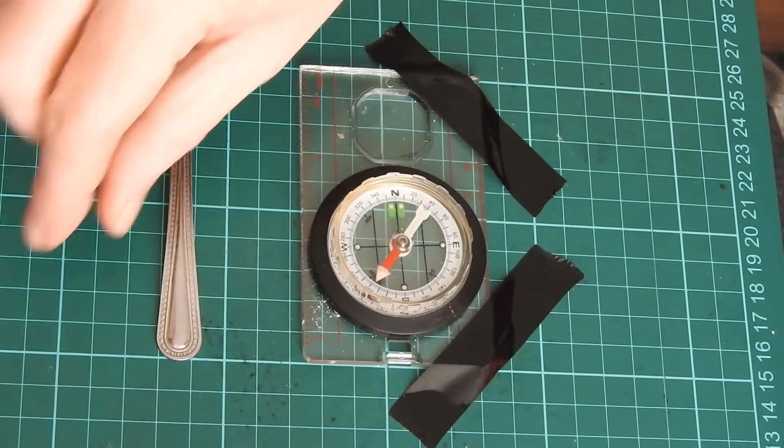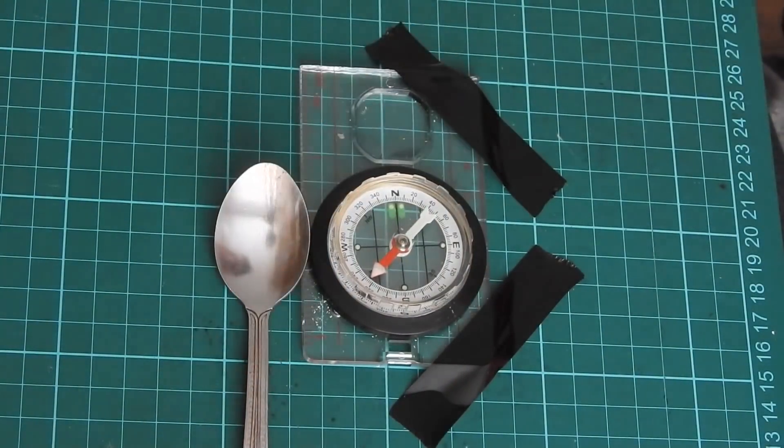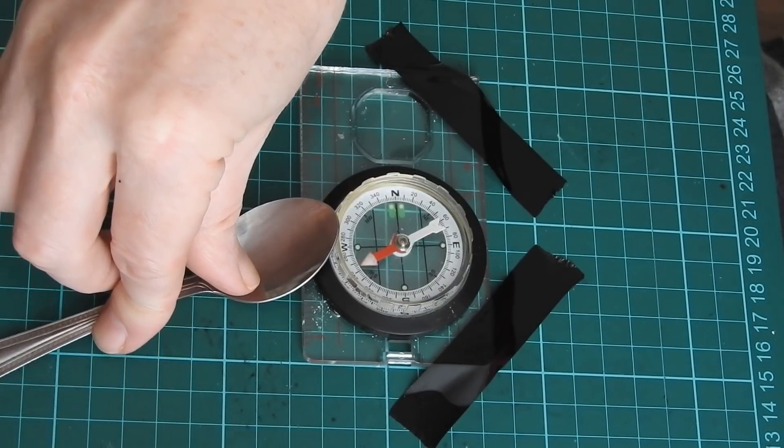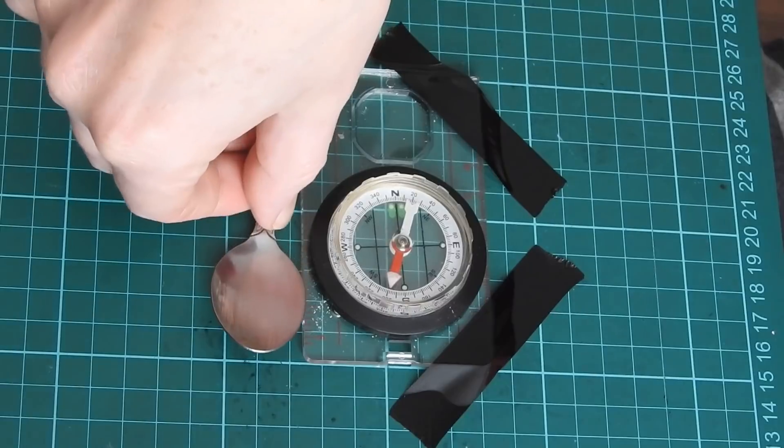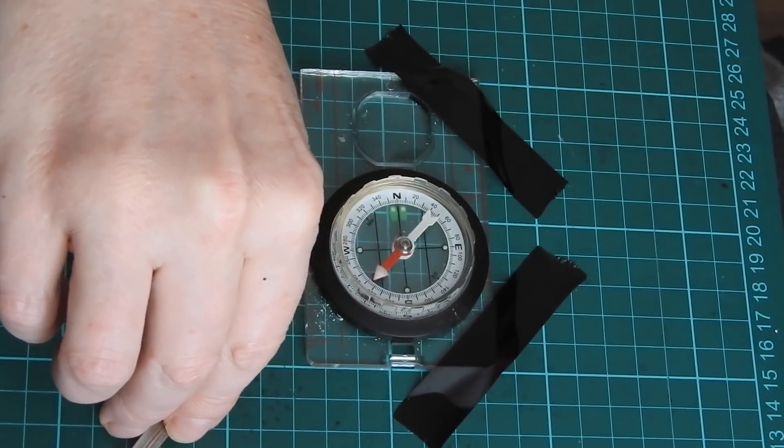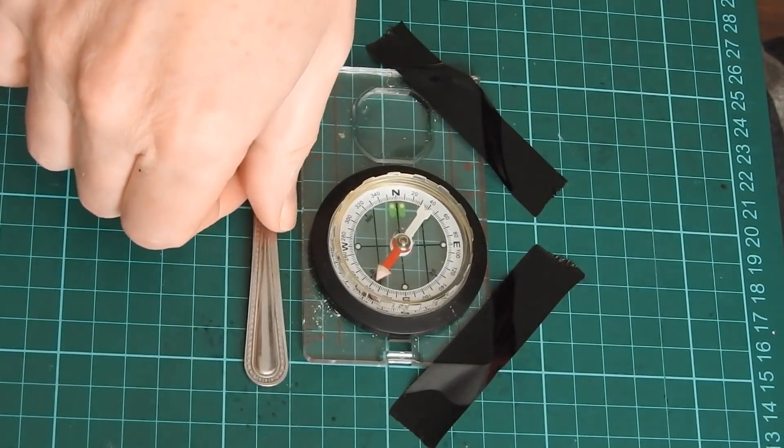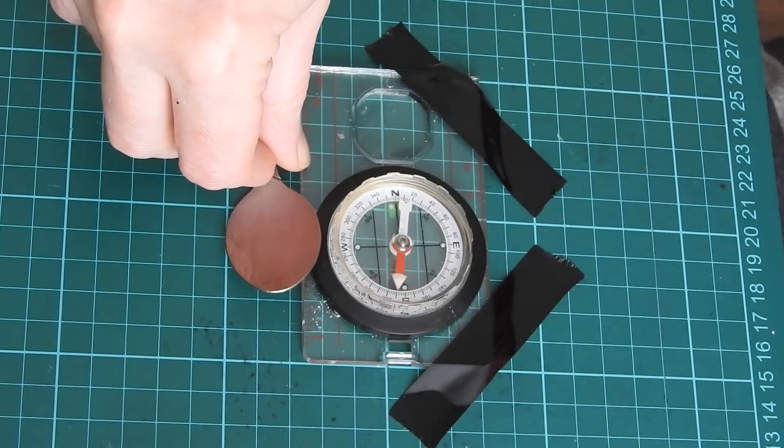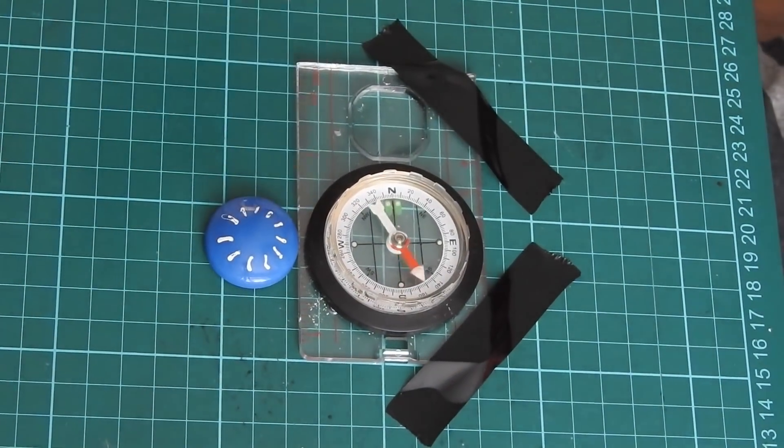This is a spoon, again very magnetic. Watch the magnetic declination. As you see, this spoon is not magnetic.